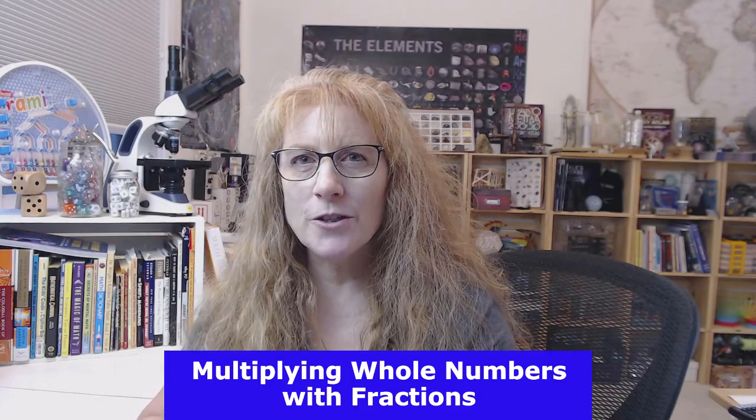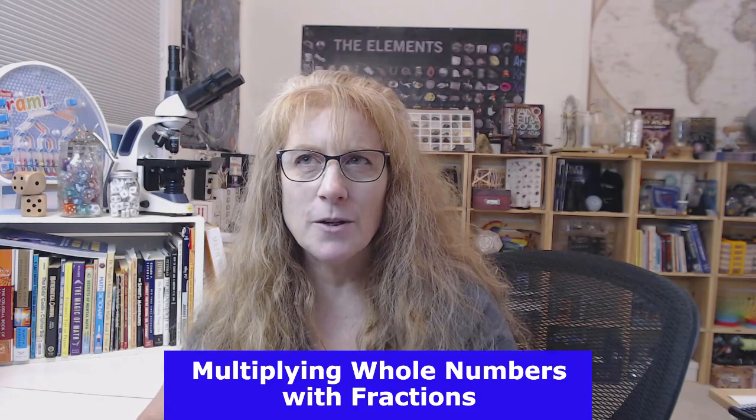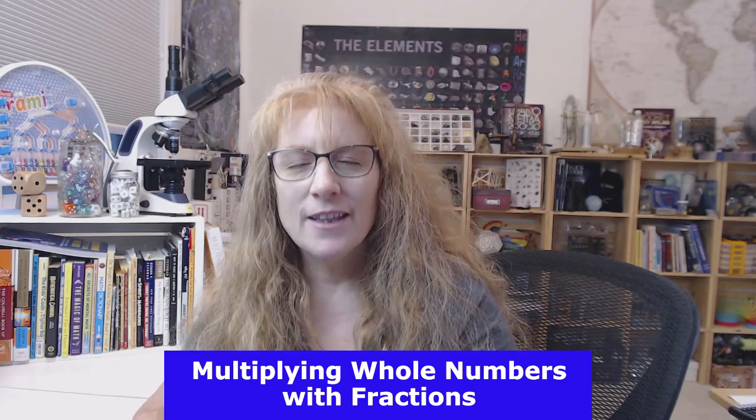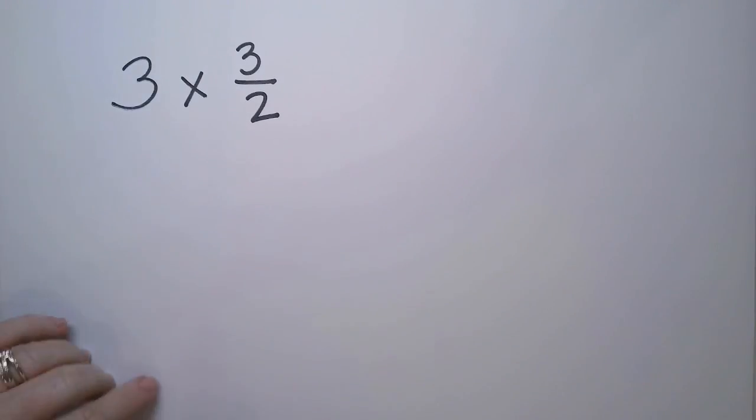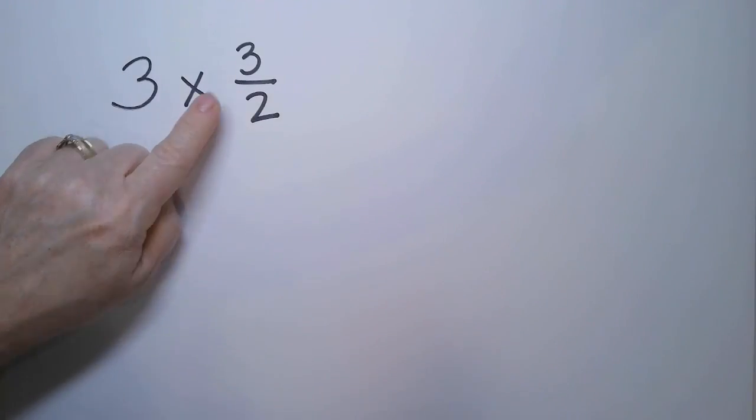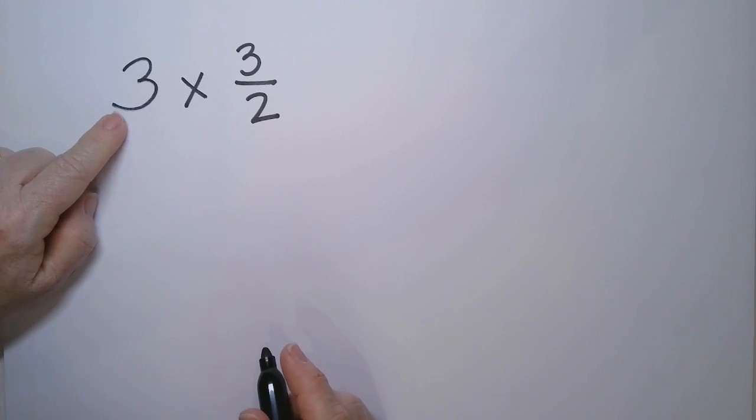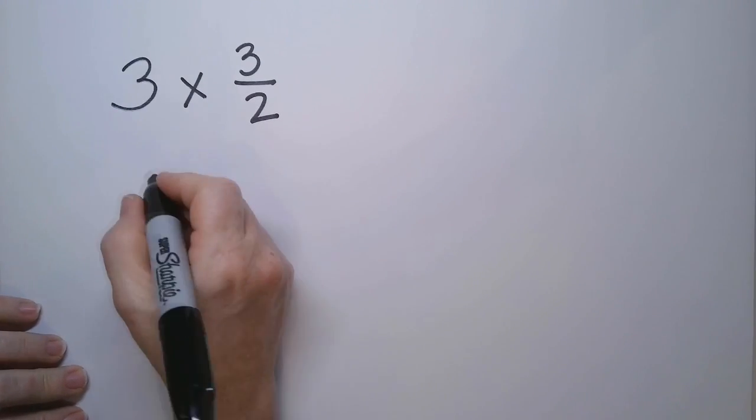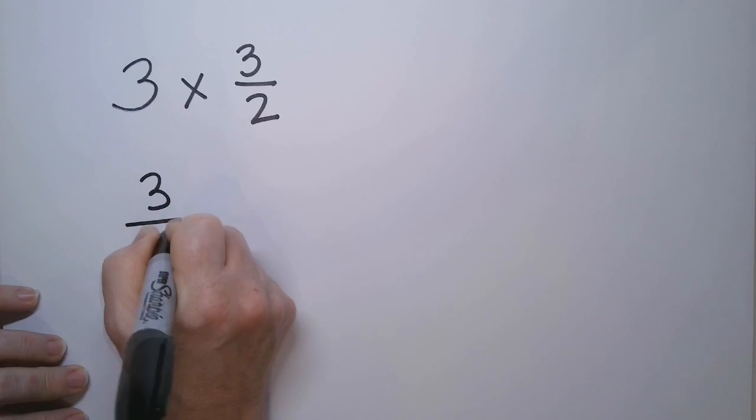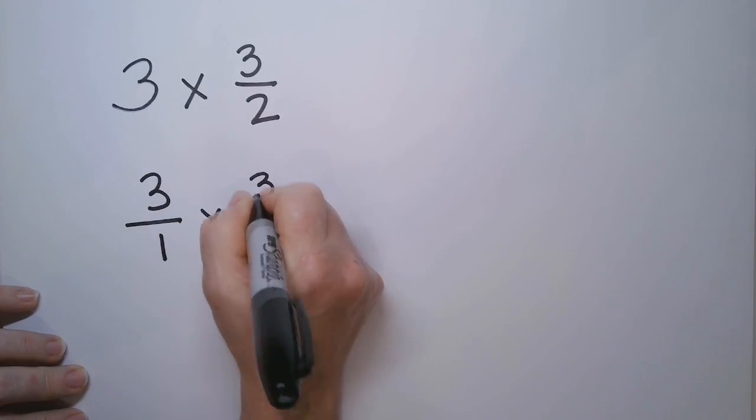Are your kids struggling to understand how to multiply fractions, especially with whole numbers? Let's handle this right now. To multiply a whole number and a fraction, you simply pull out the one that's hiding in the whole number. So this becomes 3 over 1 times 3 halves.